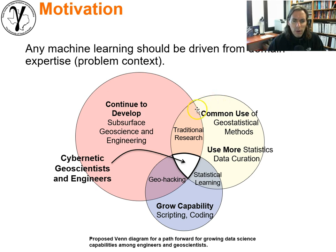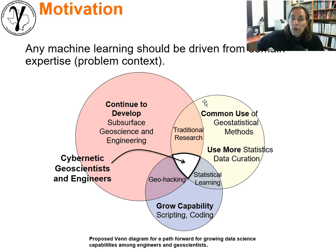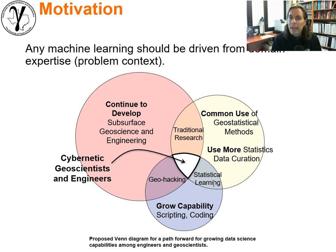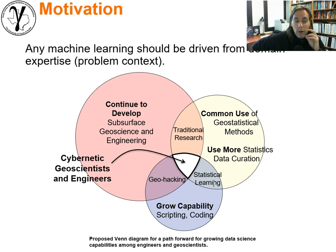We'd also have another circle — the yellow circle — which is the knowledge of statistics. In the case of spatial problems, I would suggest that would include geostatistics. We could learn about general spatial statistics, spatial point processes, and so forth. It's a broad area; statistics is vast. And the blue circle would represent knowledge about scripting, coding, and general tools that we need to use. We would need all of those in order to build data analytics and machine learning type workflows.